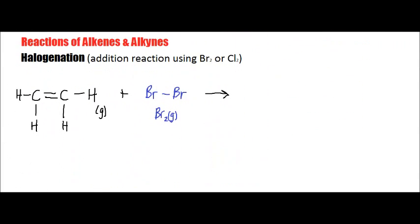Let's look at reactions of alkenes and alkynes. When dealing with these kinds of reactions, there's a lot more reactivity that can actually occur amongst alkenes and alkynes. The reason for that is because of the presence of double bonds and triple bonds, which allow for greater chemical reactivity within these types of hydrocarbons.